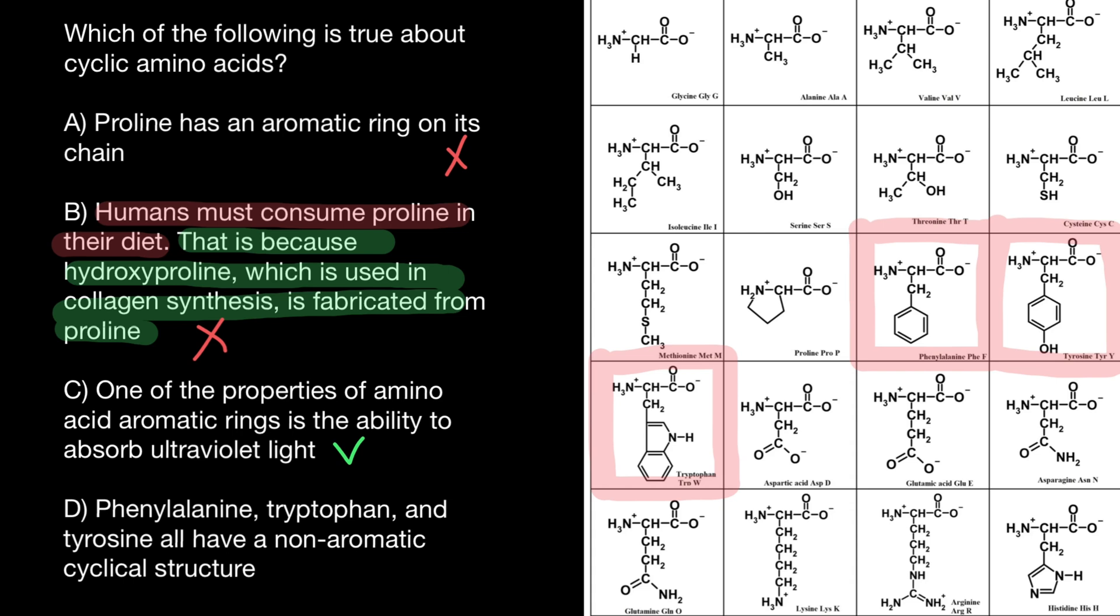And the last statement D, phenylalanine, tryptophan, and tyrosine all have non-aromatic cyclical structure. This is false. All these three amino acids have aromatic ring in its structure.